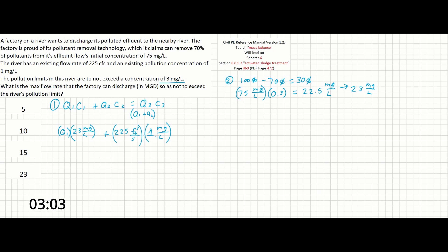Now q3 is going to be the sum of q1 and q2. However, since our goal is to solve for q1, we have to write q3 out in terms of q1 and q2. And since the upper limit of pollution is given as 3 milligrams per liter, that is going to be our c3 term.